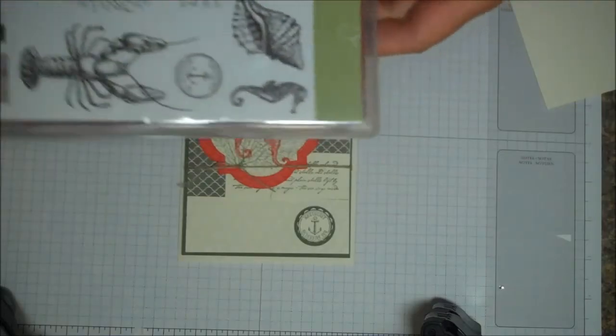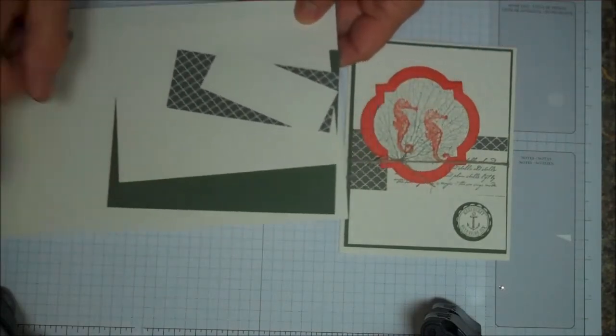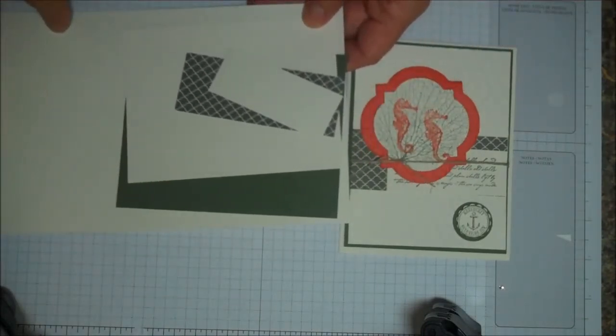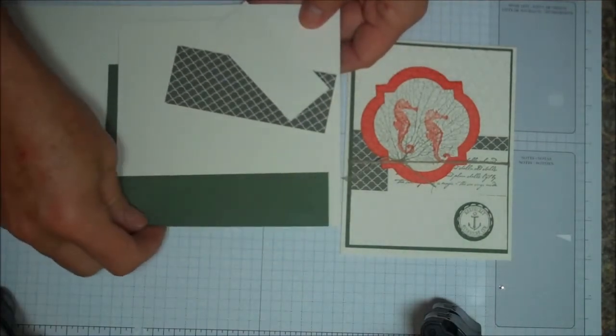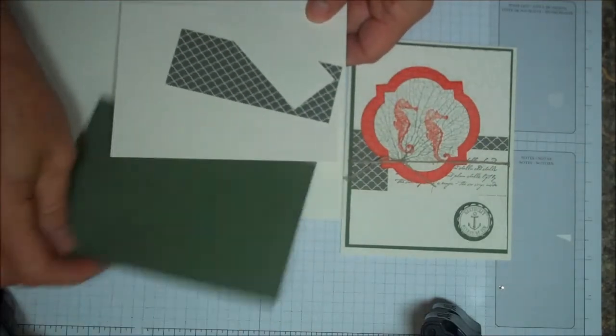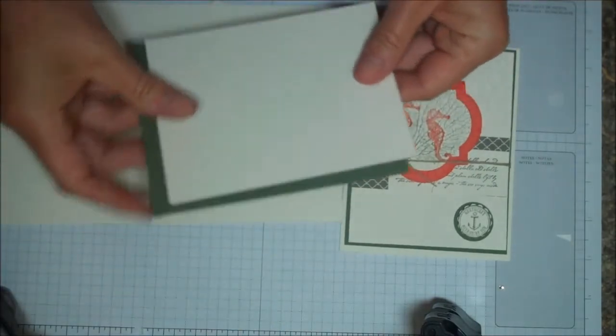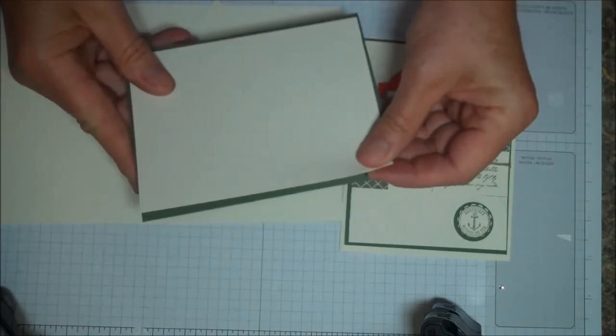I like the stamp set. It's called By the Tide. Okay, so the supplies you're going to need: you're going to need a piece of 5.5 by 8.5 of Whisper White, and then the first layer is 4 by 5.25 of Artichoke, and then just a little bit smaller by 1.8 of an inch, so I think it's 3.7 by 5.8.